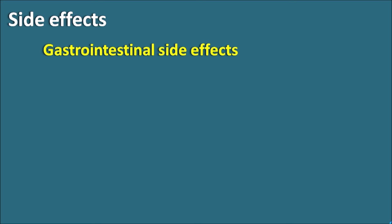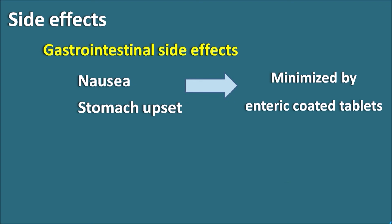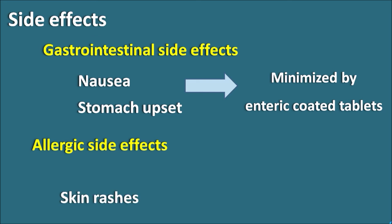What are the side effects of sulfasalazine? Sulfasalazine mainly produces gastrointestinal side effects. The important ones are nausea, which can lead to vomiting, stomach upset, stomach pain, and abdominal discomfort. All these gastrointestinal side effects can be minimized by enteric-coated tablets. The second type of side effect is allergic reactions, including skin rashes and, rarely, Stevens-Johnson syndrome.